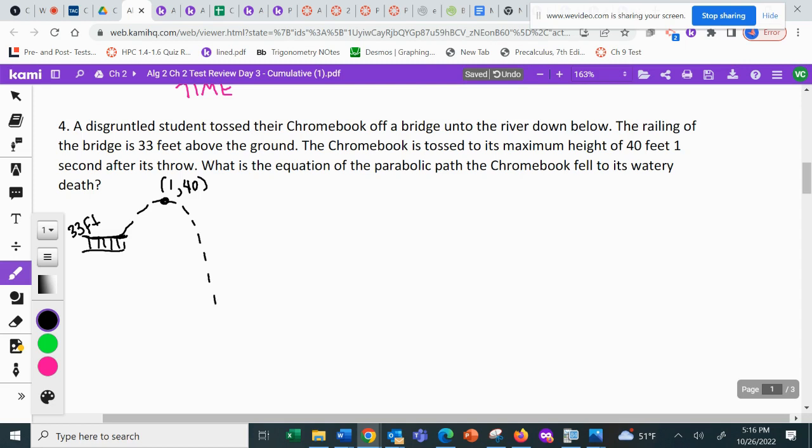And then it says, write the equation of the parabolic path. The Chromebook fell to its watery death. So when it hits the water down there, when it hits the water, that would be like an X intercept. Did I miss any information? Oh, the time to start. That was a terrible line. Let me fix that. The time to start would be time zero. This would be one second.